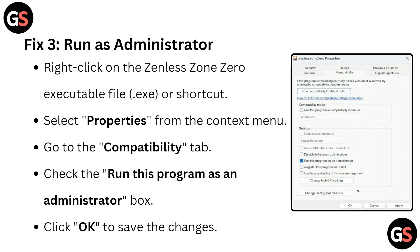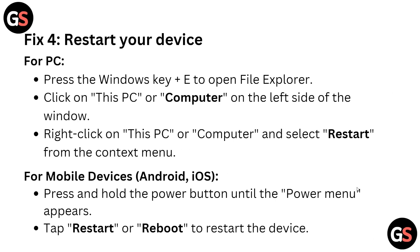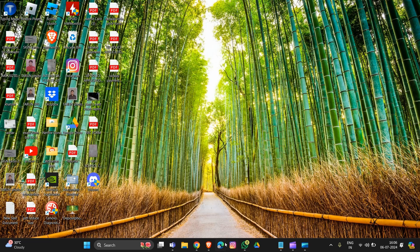If not, Fix 3 is to run the game as administrator. Right-click on the Zenless Zone Zero executable file or shortcut, select Properties. A pop-up will appear — go to the Compatibility tab and check the box for 'Run this program as an administrator.' Click OK to save the changes.